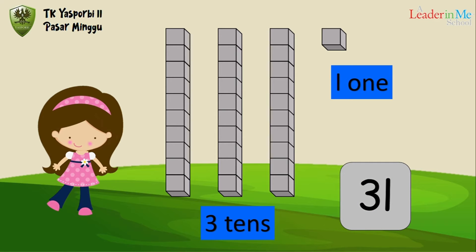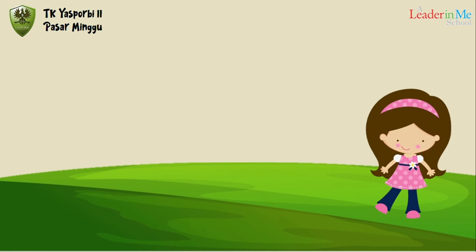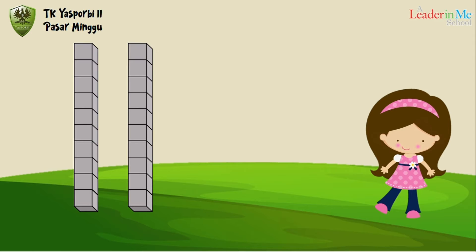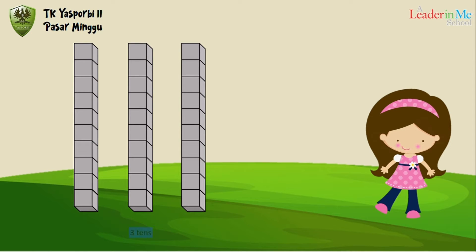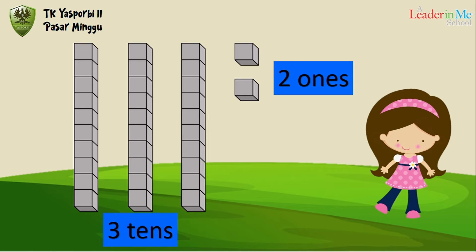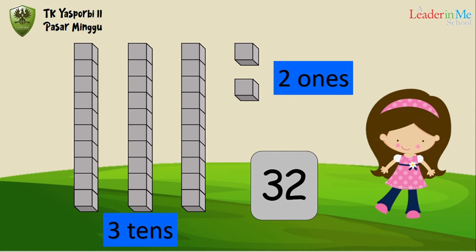Next, how many tens? One, two, three — three tens. And how many ones? One, two — two ones. Three tens and two ones equals thirty-two.